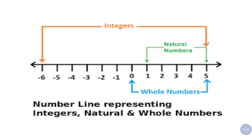Let's revise. Natural numbers are counting numbers: 1, 2, 3, 4, 5. Whole numbers are natural numbers including zero: 0, 1, 2, 3, 4, 5. Integers include negative integers, zero, and positive integers: …−6, −5, …0, 1, 2, 3, 4, 5. And the entire number line represents the real number line.